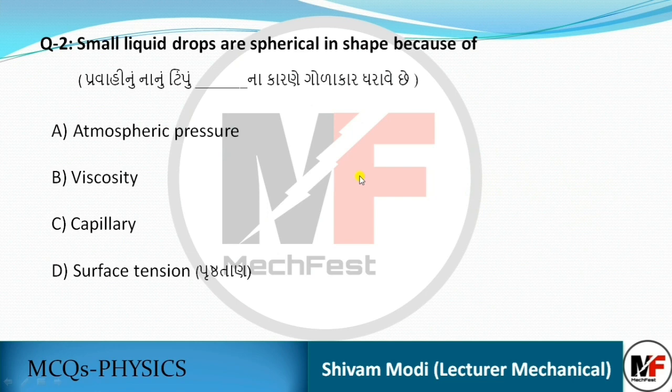Second question: Small liquid drops are spherical in shape because of what? The answer is surface tension (Prushtadhan). Its unit is Newton per meter.